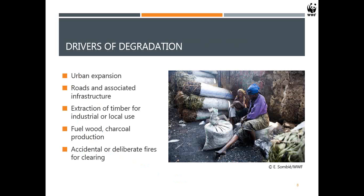What are the drivers of degradation — particularly in Central Africa? Urban expansion is a common one. Roads and associated infrastructure result in forest degradation, as does extraction of timber for industrial or local use. Charcoal production and fuel wood are very common in the Democratic Republic of Congo, and accidental or deliberate fires — where people might clear forest for a particular area and the fire gets out of control — can also lead to degradation.